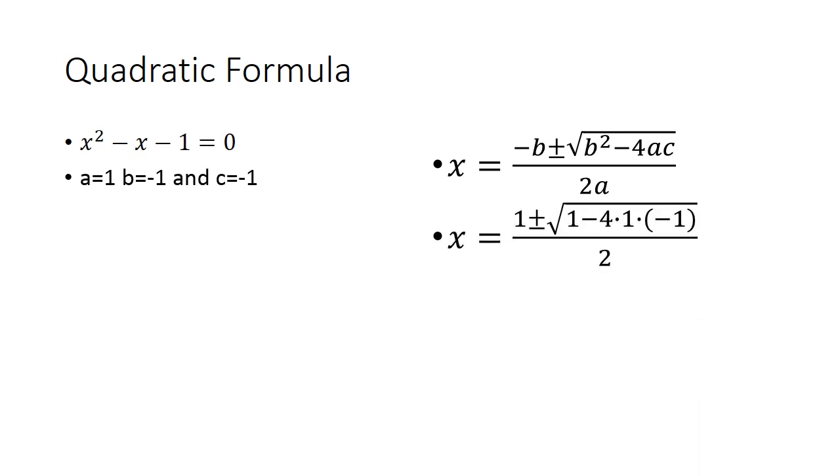And you get this, which simplifies to that. And like I said, 1 plus radical 5 over 2 is a very famous number. It's called phi.